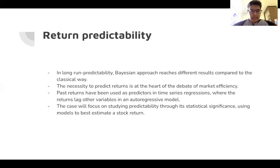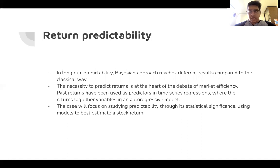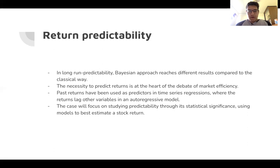In terms of return predictability, in long-run predictability, the Bayesian approach reaches different results compared to the classical way. The necessity to predict returns is a very fundamental part of the debate on market efficiency — if returns can be predicted, then perhaps the market is not always on a random walk. Past returns have been used as predictors in time series regressions, where those returns lag the variables in an autoregressive model, because stock returns are highly correlated and depend on what happens the day before.